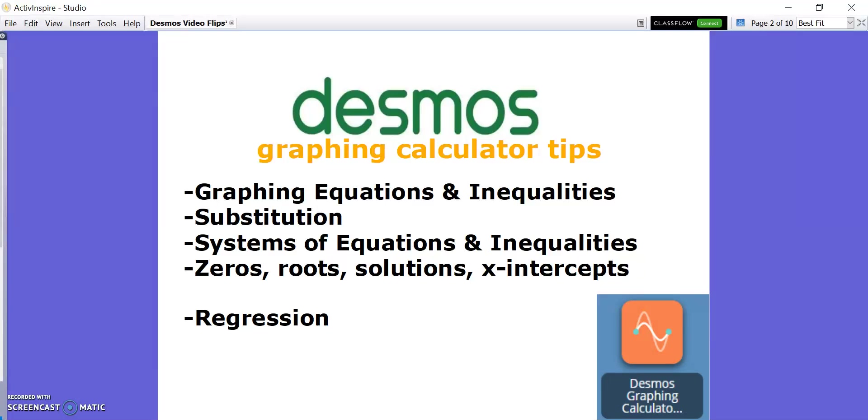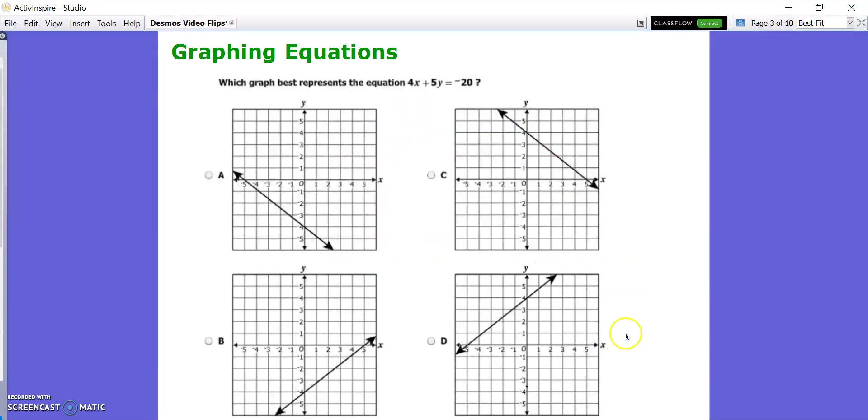Let's go ahead and look at some old SOL type problems. Graphing equations is actually really easy in the Desmos calculator. It's actually easier than the TI graphing calculators, because the TI graphing calculators only graph functions. So you would have to put this in function form, which means solve it for y. But the nice thing about the Desmos calculator is that it'll graph an equation in basically any form. So we can just graph it in this form, which is standard form. Let me show you how to get there.